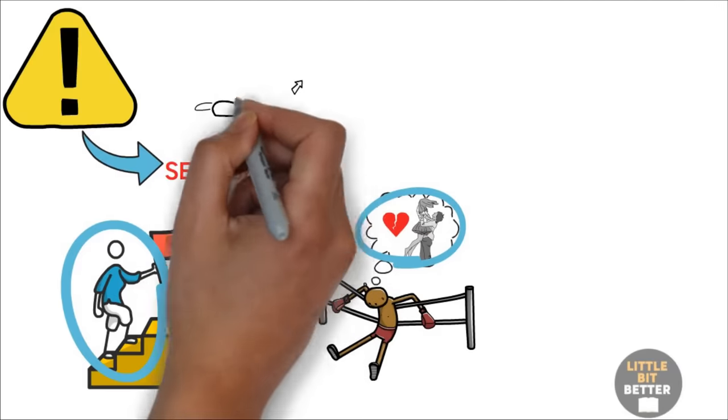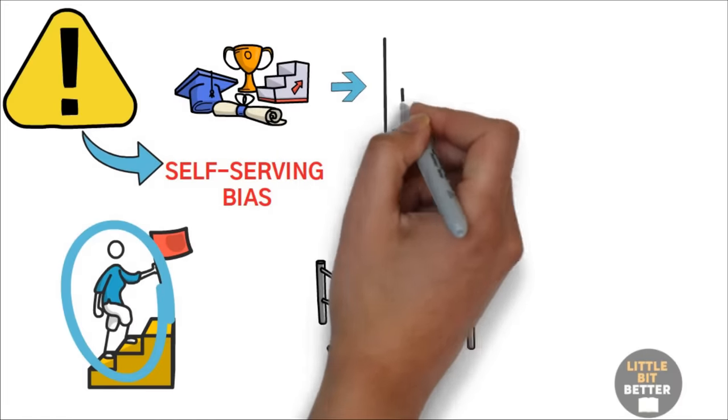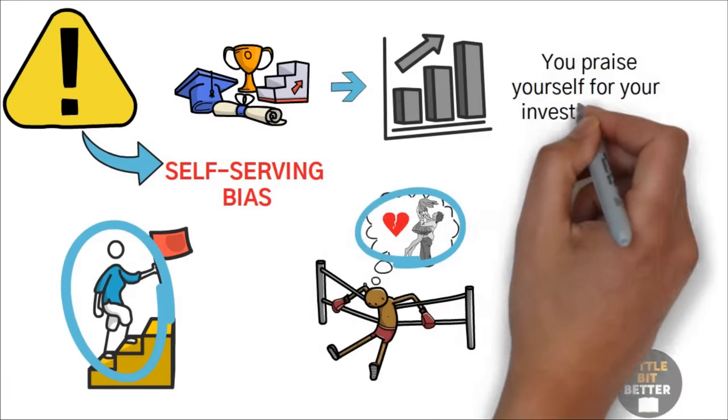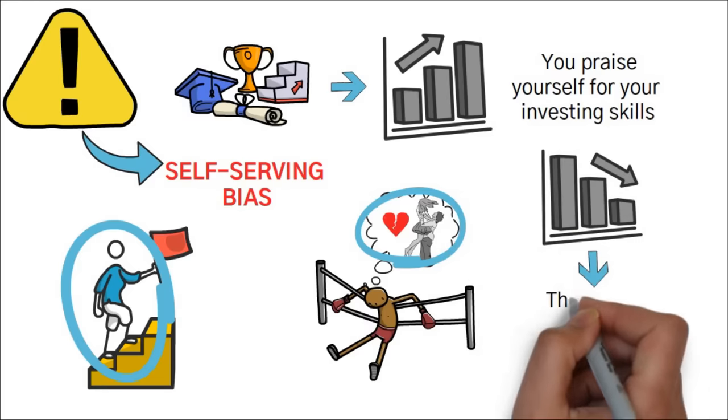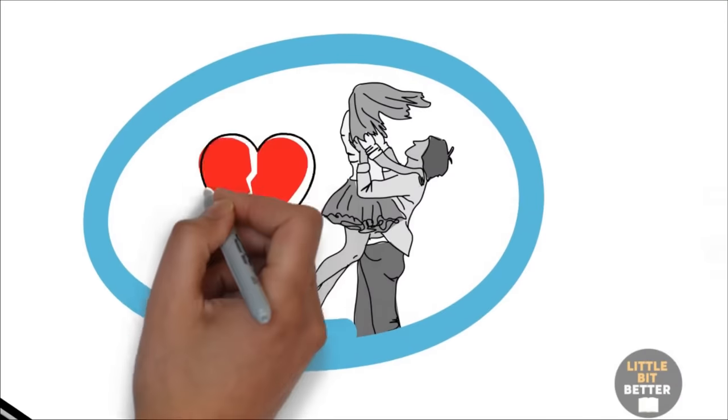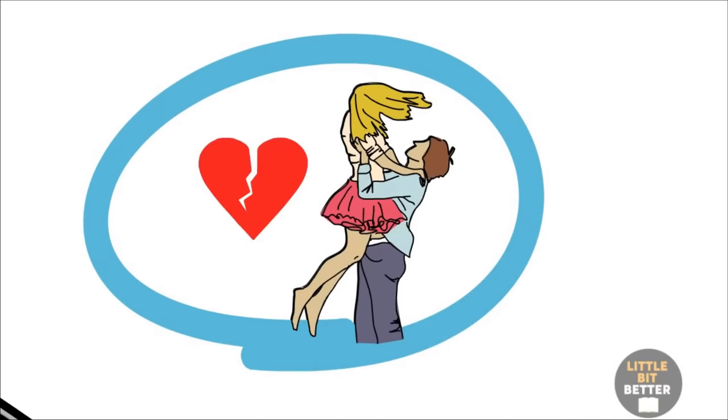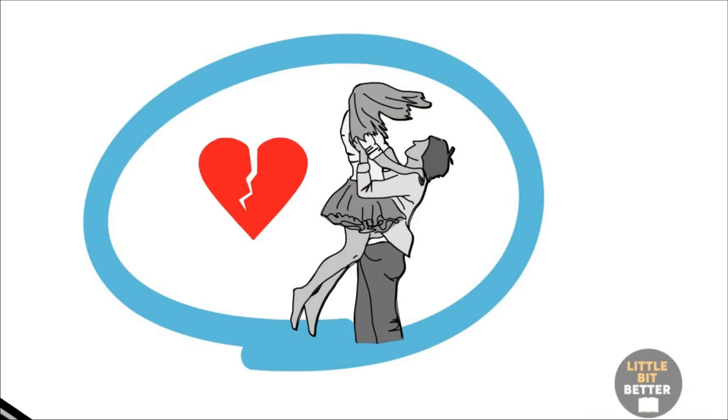All right, maybe you've been away from school for quite some time now, but self-serving bias is still with you. When you make a profit from your stock market investment, you praise yourself for your investing skills. But when your portfolio underperforms, it's because the market is terrible right now. If your marriage is okay, it's because you're a great, loving husband or wife. If it's not okay, it's because your partner hasn't been contributing their share to your relationship.